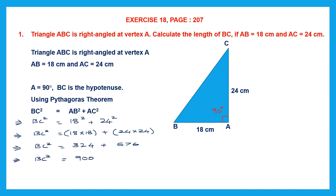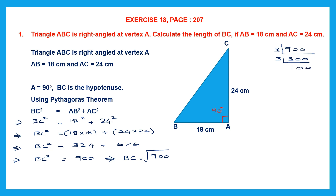So BC² = 900, but we want BC alone, so we need to find the square root of BC². BC = √900. Let's find the square root of 900 by the prime factor method — that means first we find all the prime factors of 900. Starting with 900: divide by 3 to get 300, divide by 3 again to get 100. We can't divide by 3 anymore, so use 5: 100 ÷ 5 = 20, then 20 ÷ 5 = 4.